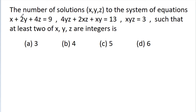In this video, we have to find the number of solutions x, y, z to the system of equations: x plus 2y plus 4z is equal to 9; 4yz plus 2xz plus xy is equal to 13; and xyz is equal to 3, such that at least 2 of x, y, z are integers.